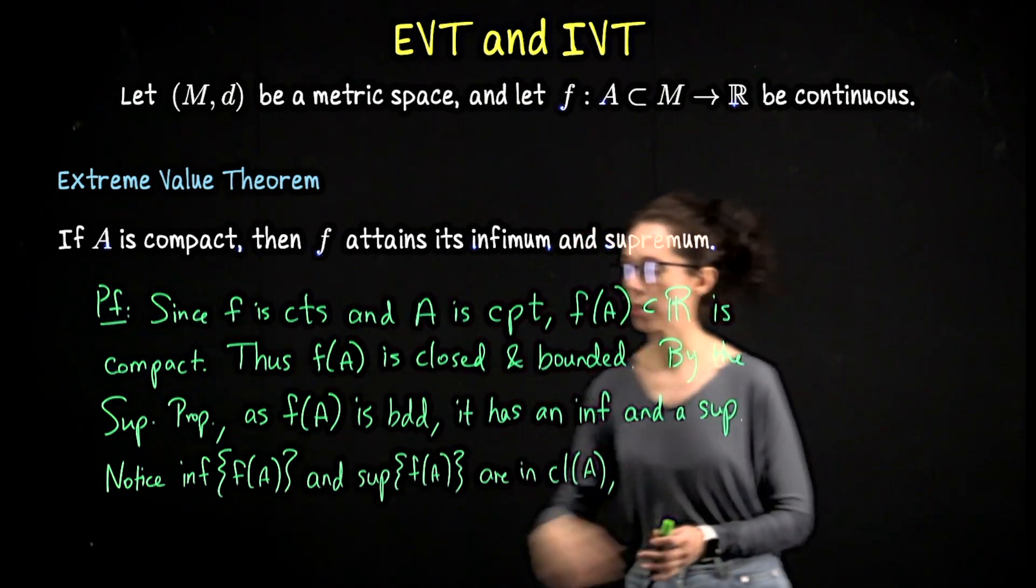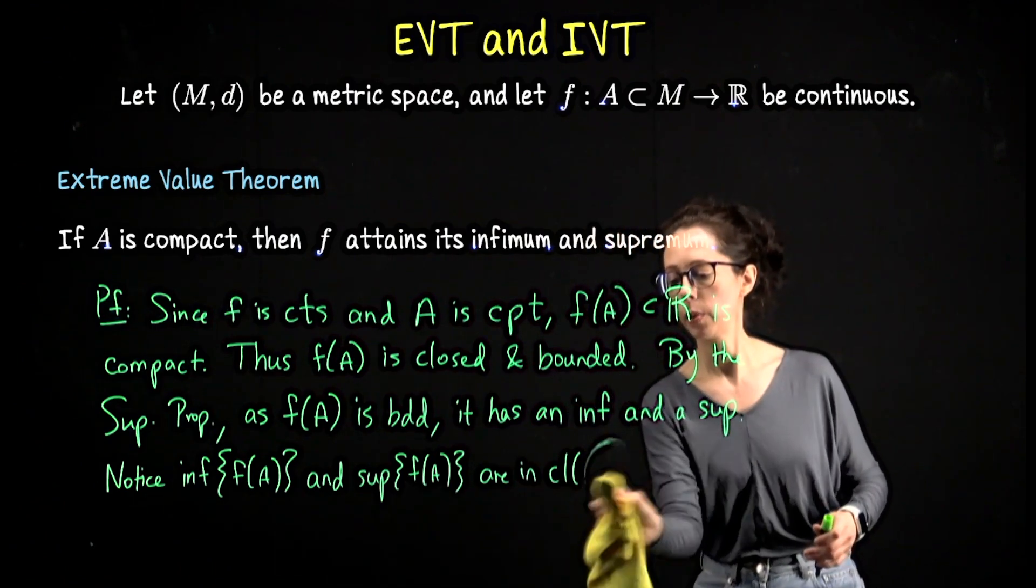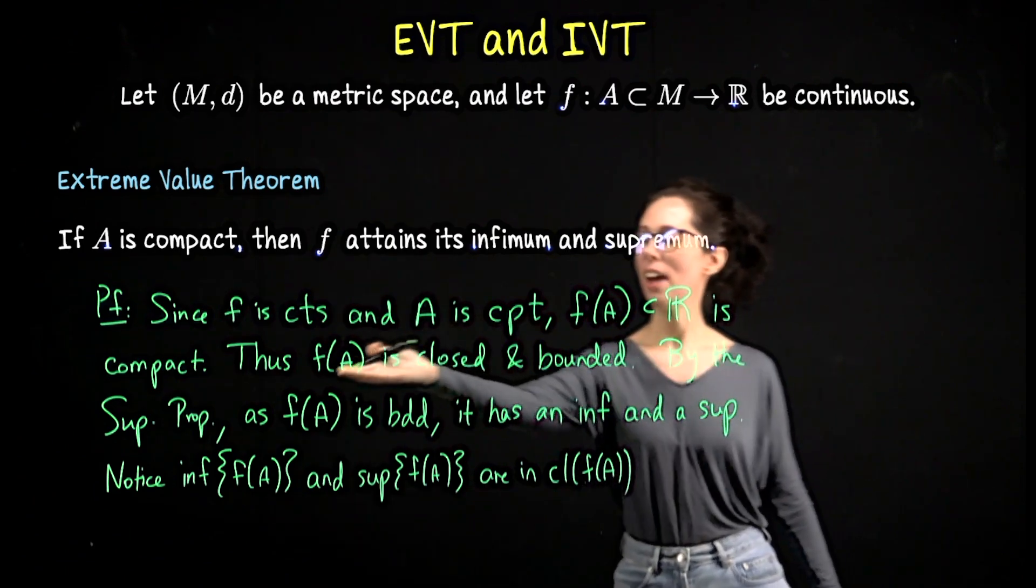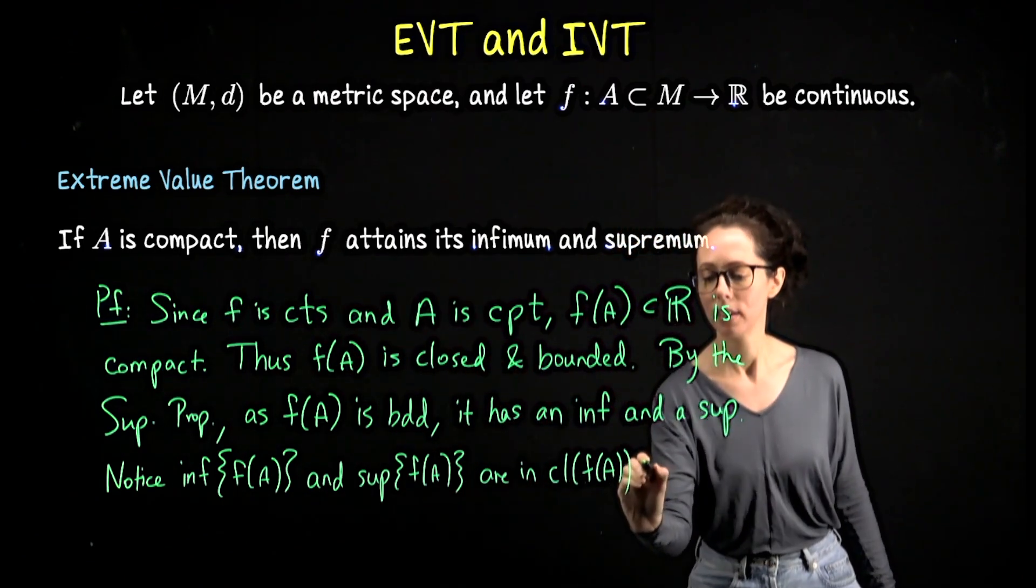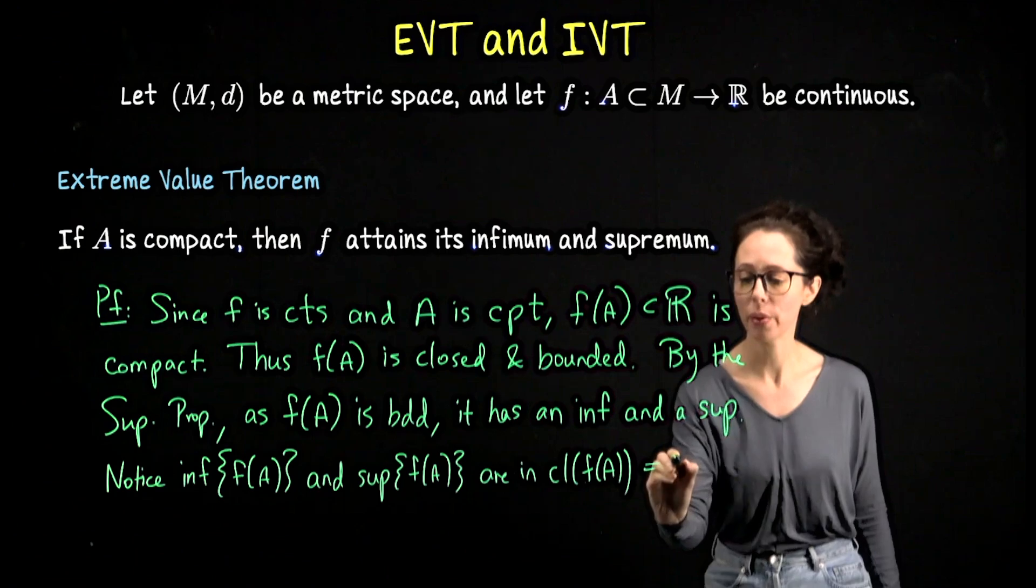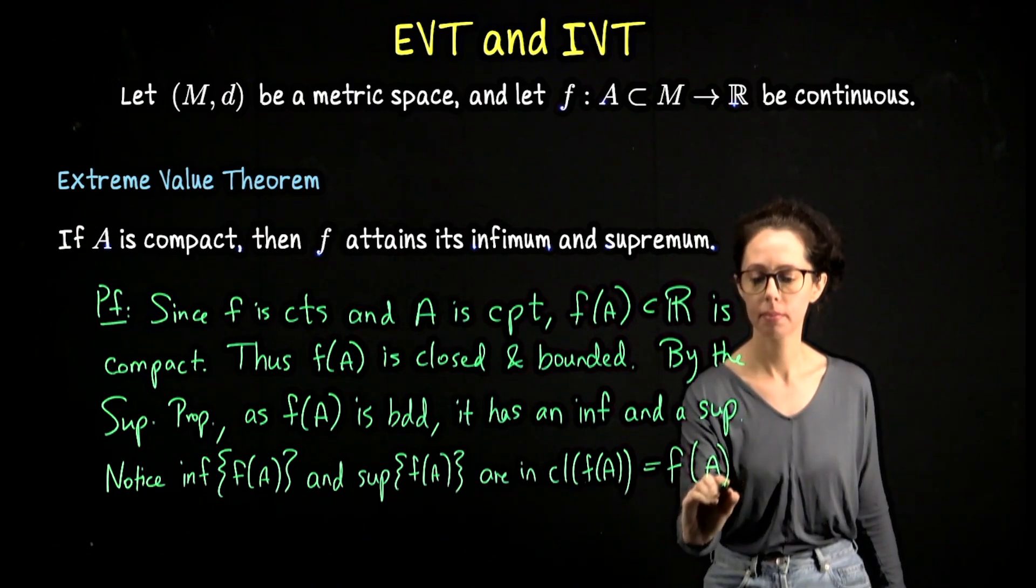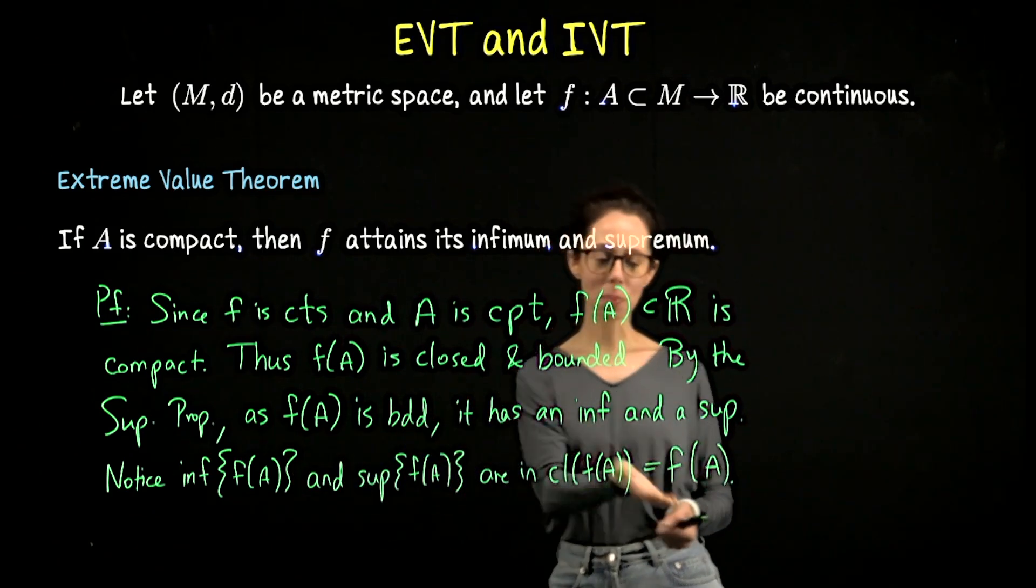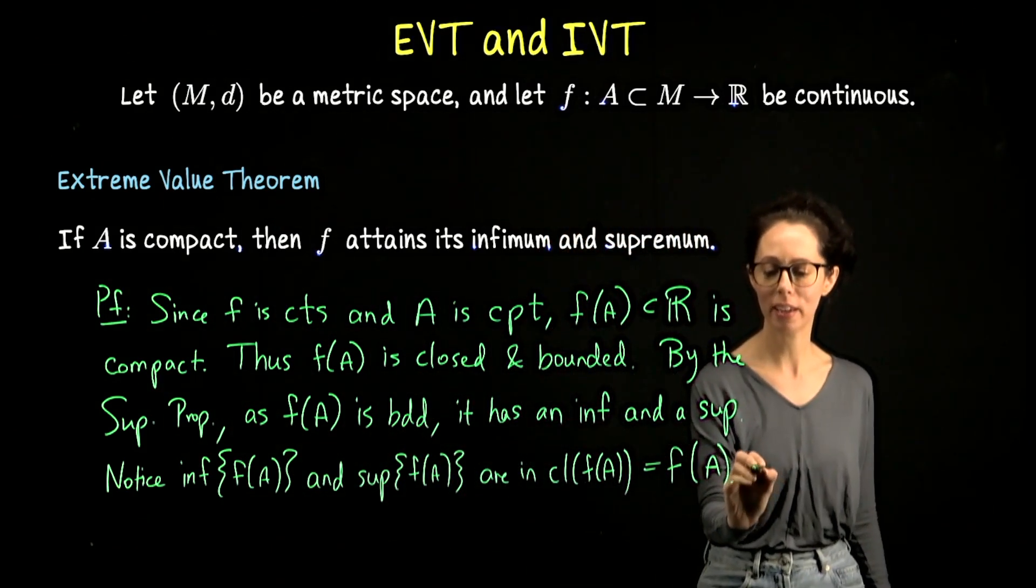Notice the inf of f(A) and sup of the range are in the closure of f(A). But f(A) is already closed, so closing it off does nothing to it. And that's it. The infimum and supremum must belong to the set because the set is closed.